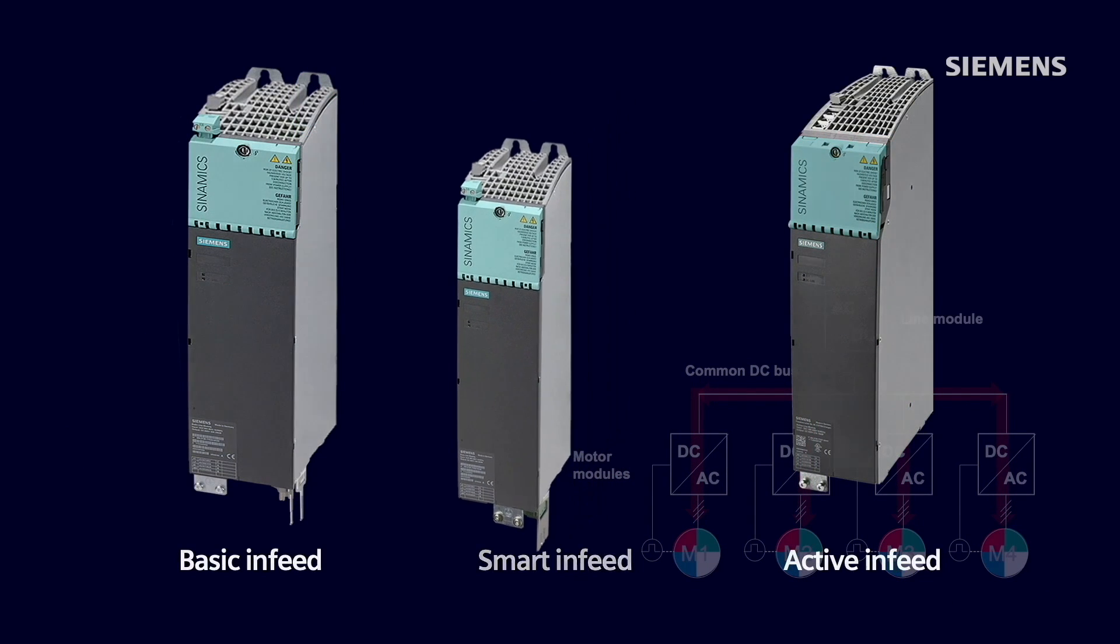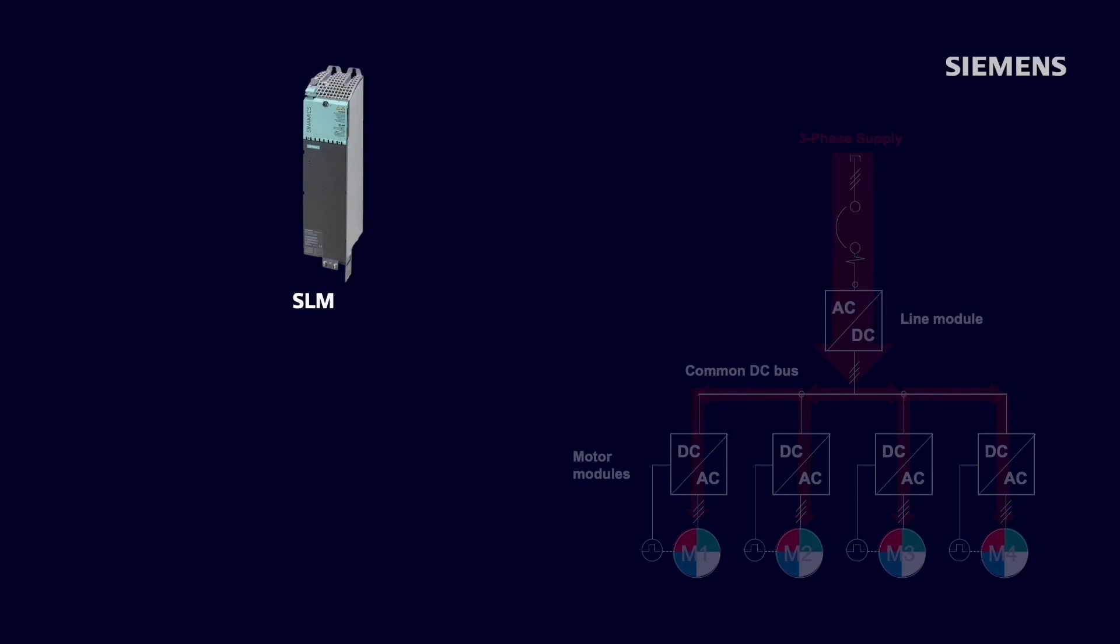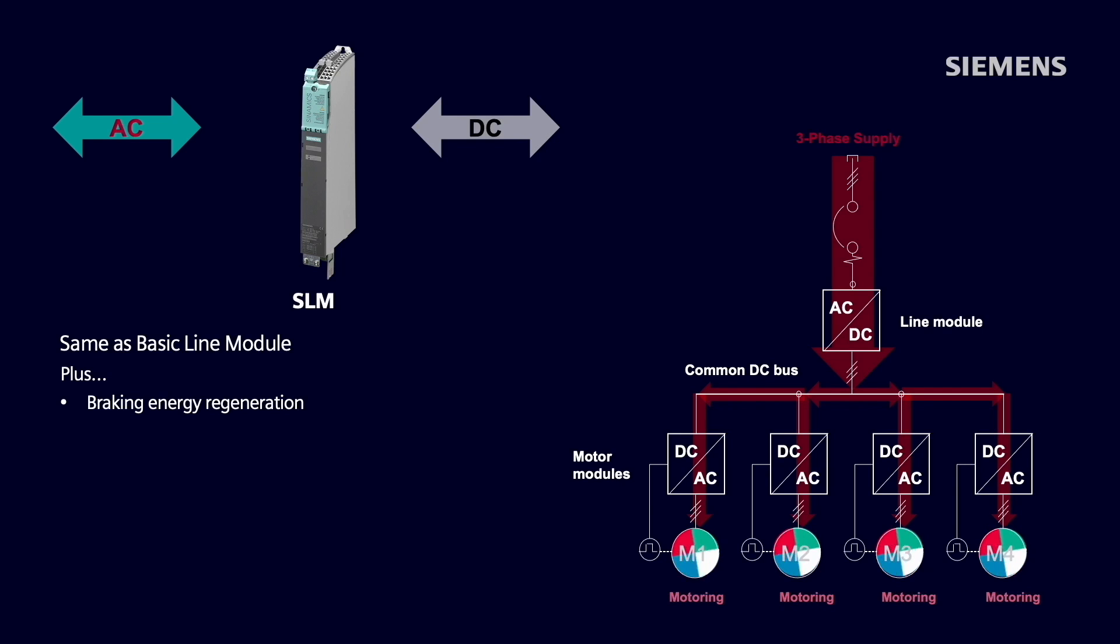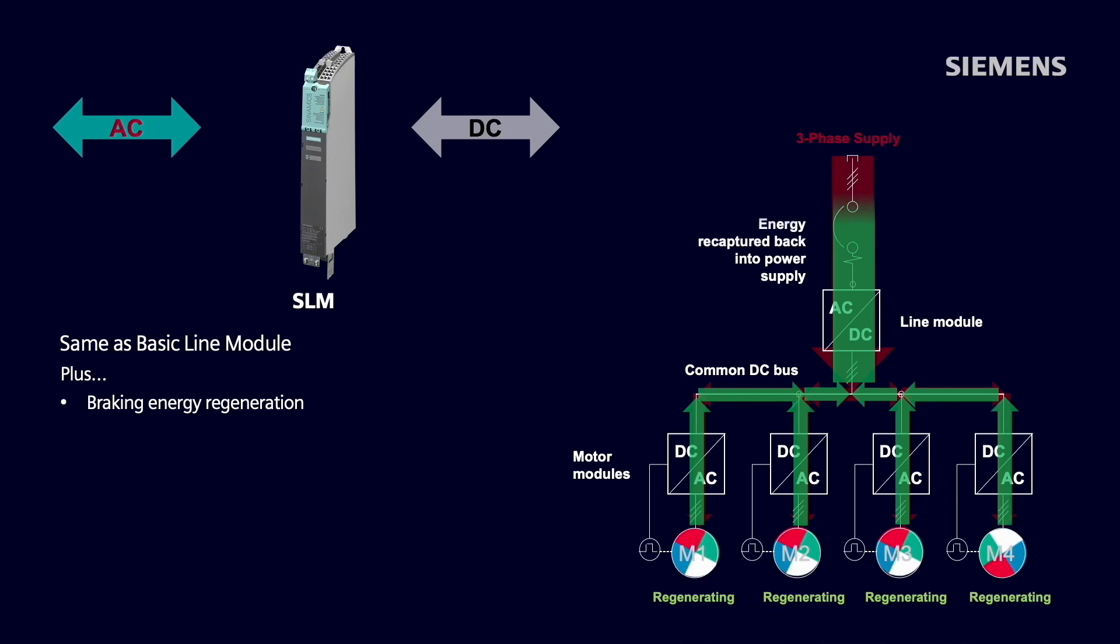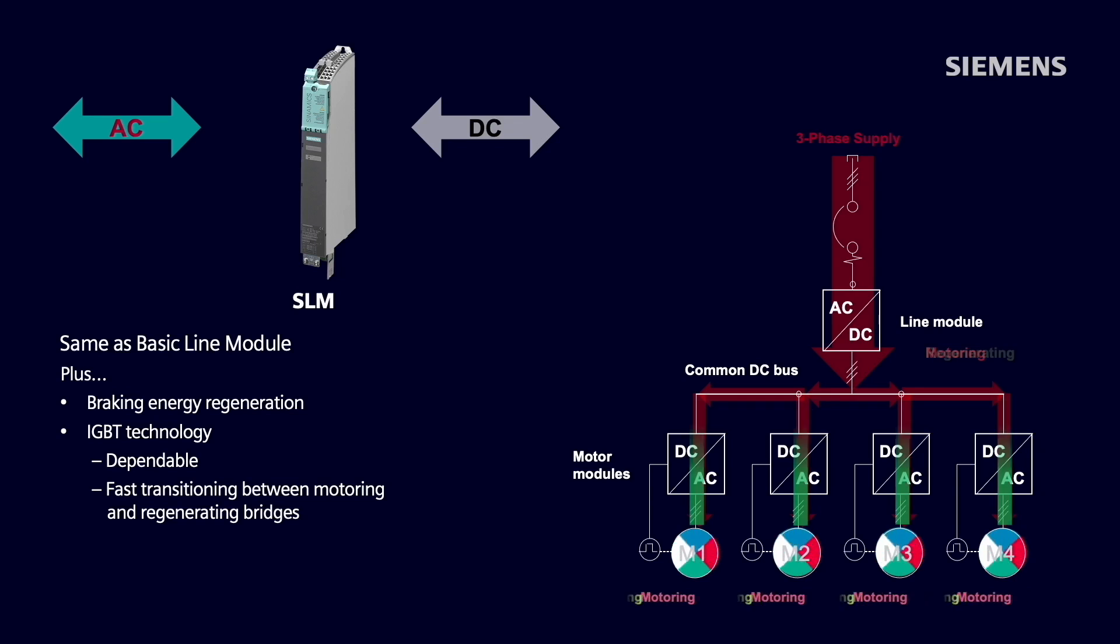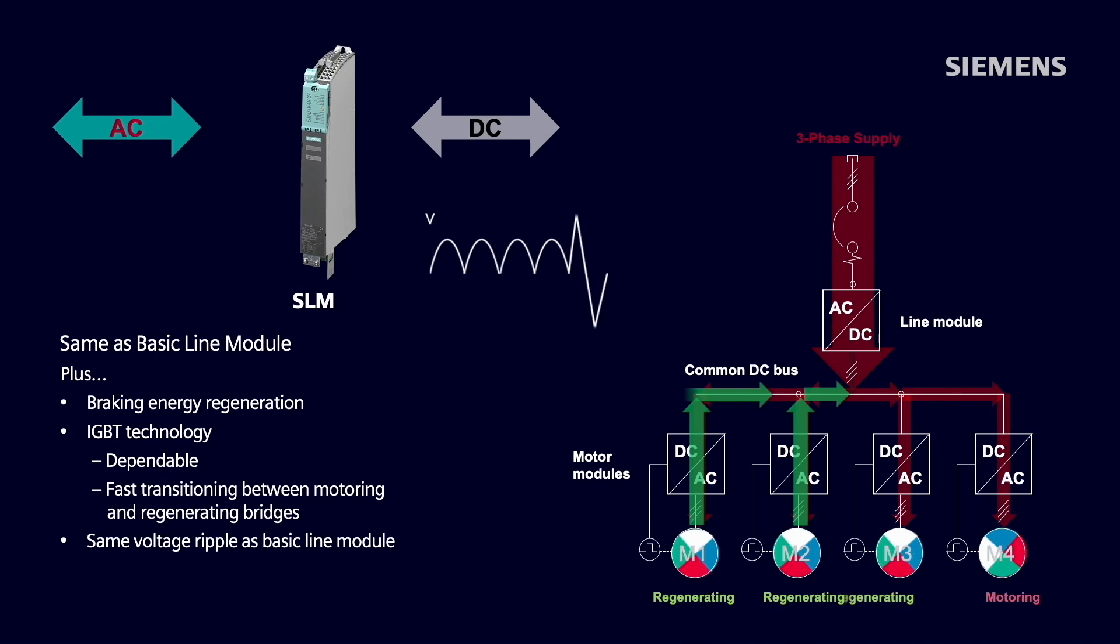Now, if we move to the middle selection in our flexible offering, we have the smart line module. The smart line module is regenerative, which means power can flow into and out of the line module, depending on the power differential between the three-phase AC supply and the DC link. So, anytime we have an overhauling load that increases the DC link, that power would be recovered back into the incoming line. This technology is controlled by IGBTs, which make this option very dependable and provides fast transitioning between the motoring and regenerating bridges. The DC link voltage and ripple with the smart line module is similar to the basic line module.